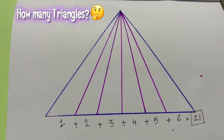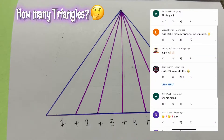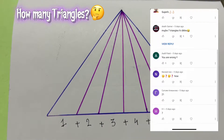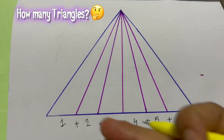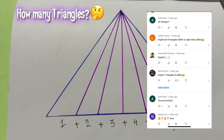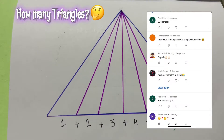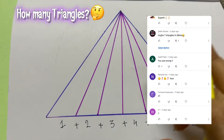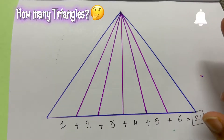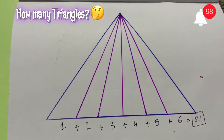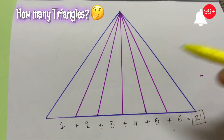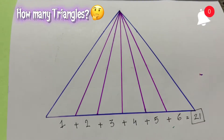Now, so many of them asked me how it is possible — how you can say there are 21 triangles in this. There may be 22, there may be 7 or something. So, I am just making this video for that, and I am going to prove how there are 21 triangles in this.